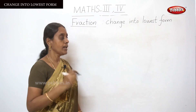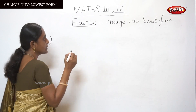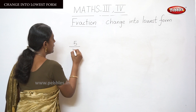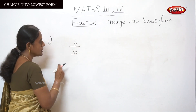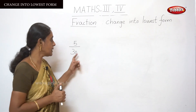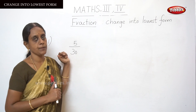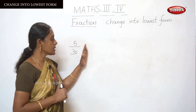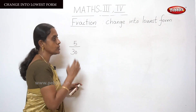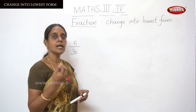How to change to the lowest form? I am going to explain with an example sum. That is 5 by 30 — this is a proper fraction because the denominator is bigger than the numerator. To reduce this to lowest form, the numerator and denominator should both be divided by the same divisor number.